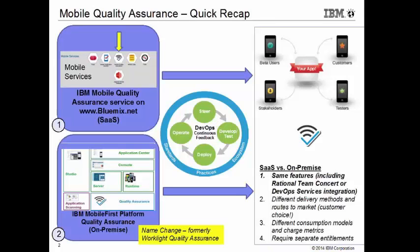That on-premise product has been newly named IBM Mobile First Platform Quality Assurance. It was formerly known as Worklight Quality Assurance. As IBM rebrands and refocuses its mobile strategy, we are naming this IBM Mobile First Platform Quality Assurance. Both products have the same features, whether you choose software as a service or on-premise, including integration to Rational Team Concert for DevOps Services integration.